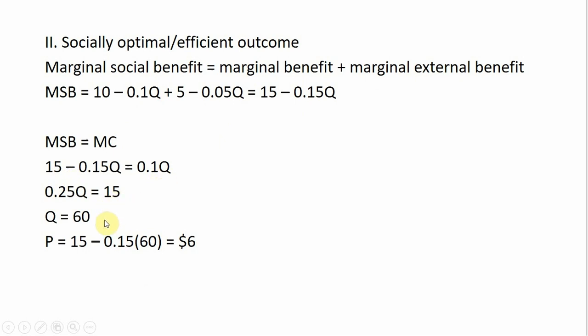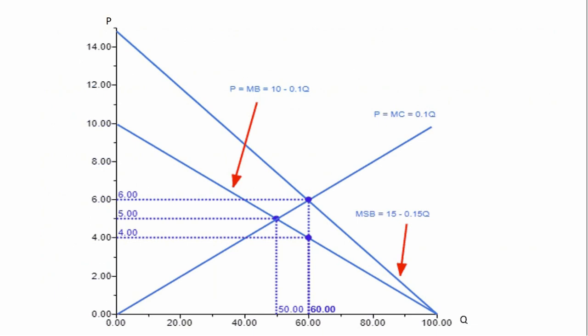Collecting the Q terms and solving for Q, the equilibrium quantity is 60 and the equilibrium price here is $6. And as noted before, when there's a positive externality present, the socially optimal outcome will exceed the market or unregulated market outcome. Let's take a look at this graphically.